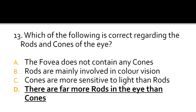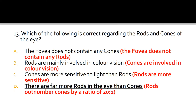The correct answer is D: there are far more rods in the eye than cones. A is false because the fovea does not contain any rods. B is false because cones are involved in color vision. C is false because rods are more sensitive to light than cones. D is true — rods outnumber cones by a ratio of 20 to 1.